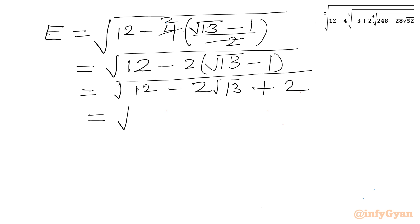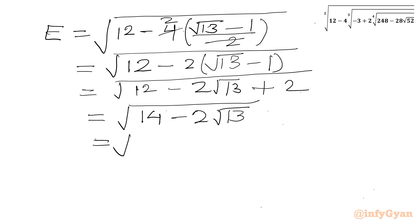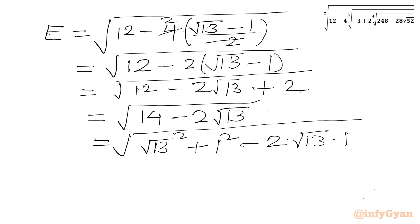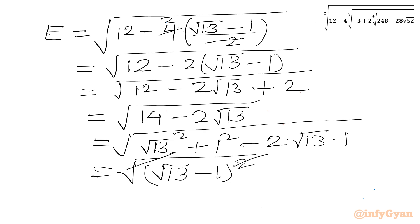So this is square root of (14 − 2√13). I split 14 as 13 + 1, writing 13 as (√13)² and 1 as 1², with middle term 2 × √13 × 1. Again a² + b² − 2ab = (a − b)², so we have square root of (√13 − 1)², and the square root and square cancel, giving our final answer E = √13 − 1.